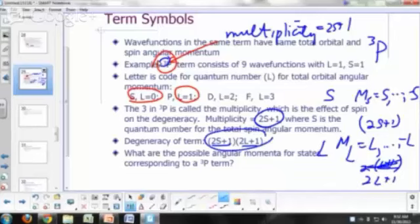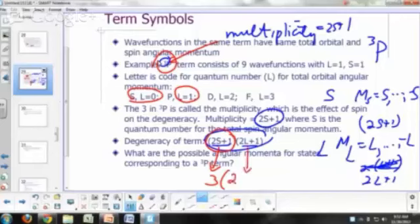So for a triplet P, what's your degeneracy then? 2S plus 1 is how much? 3, 2S plus 1 is the multiplicity. What's 2L plus 1? What's our L here? Our L is 1 for a P term, plus 1. So that gives you 3 times 3. That is 9.